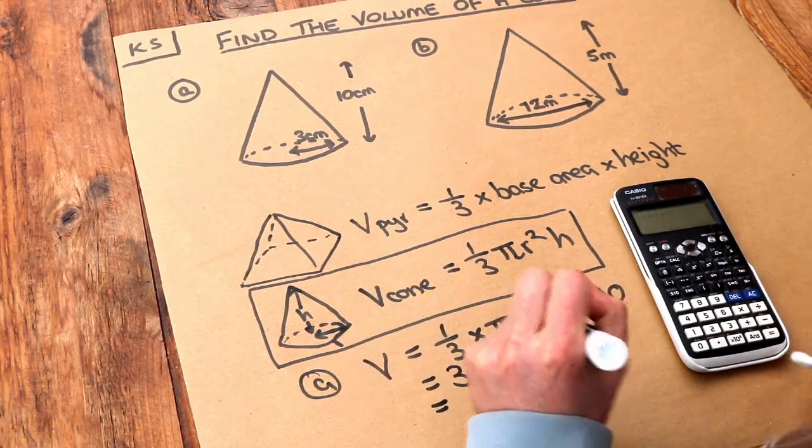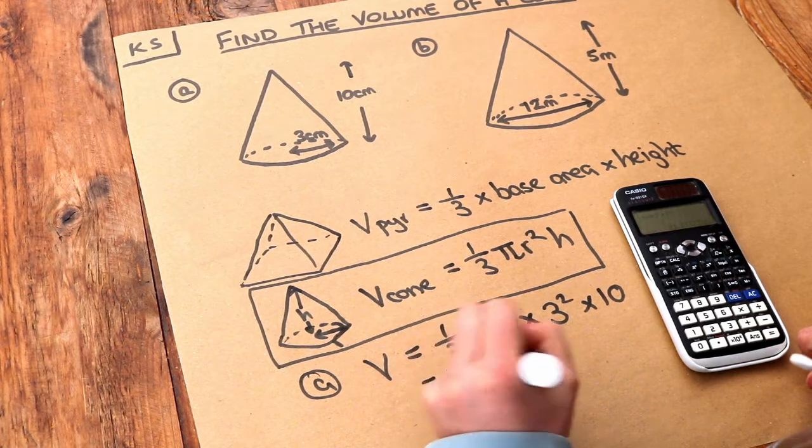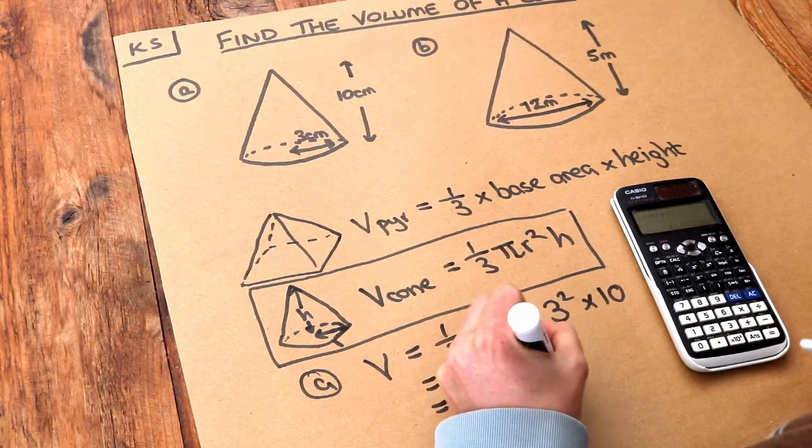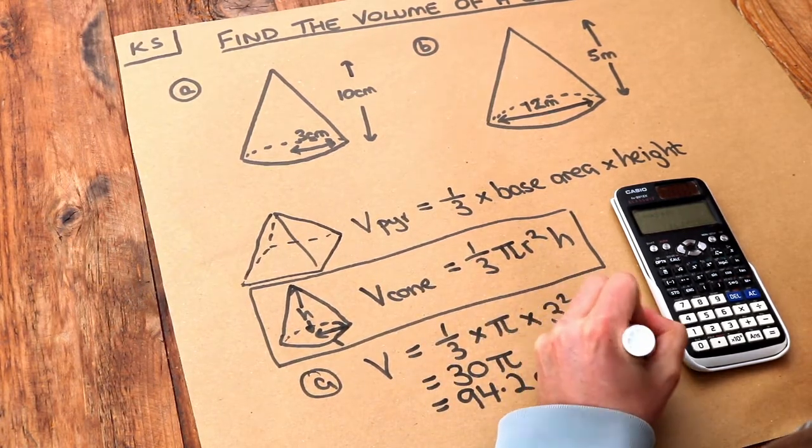as a decimal, if you press the S⇔D key, 94.2. What's the unit? For volume in centimeters, it will be centimeters cubed. That was to three significant figures, so that's the final answer.